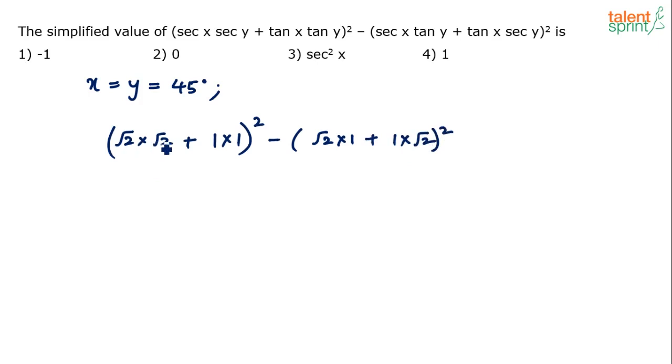So what do we get? √2 into √2 is 2, plus 1 is 3. 3 squared is 9, minus... √2 plus √2 is 2√2. 2√2 whole square is 8. 9 minus 8 equals 1. That's your answer. 9 minus 8 equals 1.